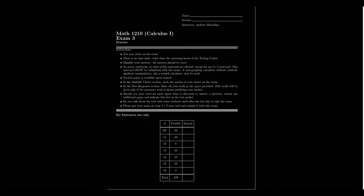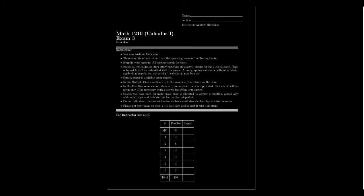Some of those details do change from semester to semester. So if you have questions about the dates of the exam, time limits, calculator use, and any other policies like that, I would refer you to the course syllabus, which can be found on Canvas. This test will have 15 questions. 10 of them will be in the multiple choice section. Each of those questions are worth five points each. You'll select the single correct answer, and full credit will only be given upon selecting the correct answer. If you select anything else or don't clearly select anything, you would get no credit on those.